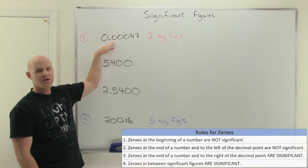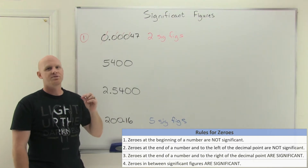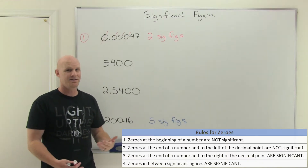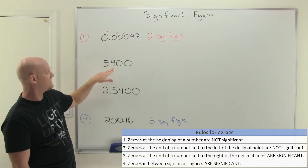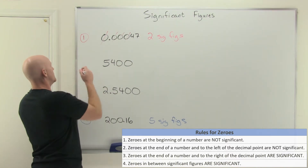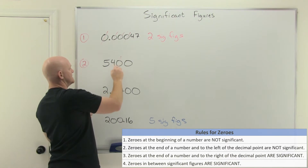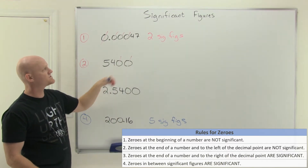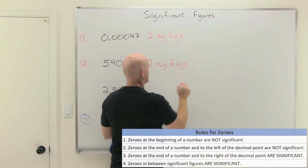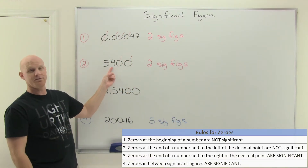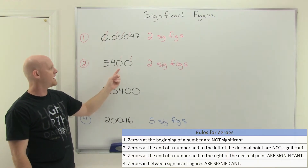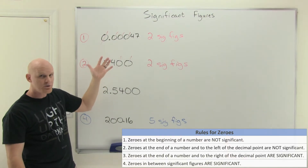Zeros at the beginning of a number: never significant. Zeros in the middle of a number: always significant. The tricky part comes for zeros at the end of a number. It depends on which side of the decimal they fall. Rule number two: if a number ends in zeros to the left-hand side of the decimal — like 5,400 — those zeros are not significant. The 5 and 4 are significant, but the two zeros are not. So 5,400 has only two sig figs; we know it give or take within a hundred, so it's significant only to the hundreds place.